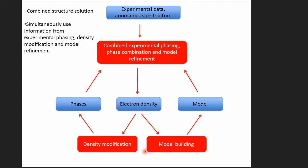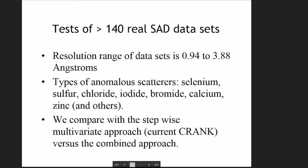We took over 150 data sets from a wide range of resolutions — under one angstrom to 3.88 angstroms — and a wide range of anomalous scatterers: mostly selenium, but also sulfur, chloride, iodide, bromide, calcium, zinc, and others. We compared the stepwise multivariate approach in Crank1 with the combined algorithm in Crank2. We implemented this in RefMac and used Parrot and Buccaneer for density modification and model building, though interfaces for ShellXE and ARP/wARP are also available.